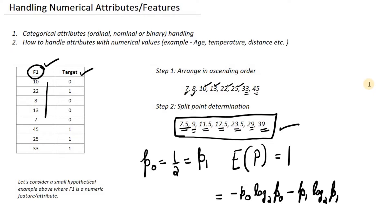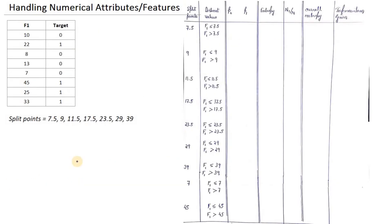So we have completed both step 1 and step 2, and we calculated the entropy of the parent node, which will be helpful when computing information gain for splitting F1. The split points obtained from step 2 are now used: we consider each individual split point as a basis for making a decision. For example, at split point 7.5, we take two decisions — whether F1 is less than or equal to 7.5, or greater than 7.5. Similarly, for split point 17.5, F1 can be either less than 17.5 or greater than 17.5.